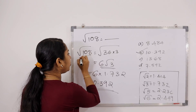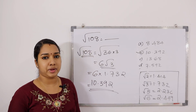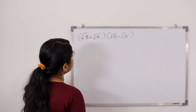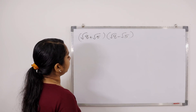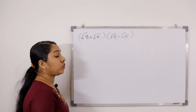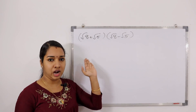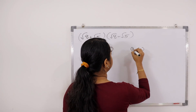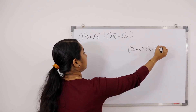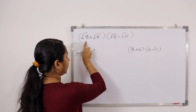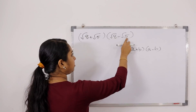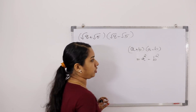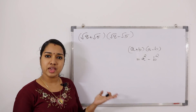A simple question: √8 plus √8 into √8 minus √8. If you have a pattern, you will recognize a plus B into A minus B. That is A squared minus B squared. Here we have A plus B = √8 plus √8, and A minus B = √8 minus √8. So A plus B into A minus B equals A squared minus B squared.